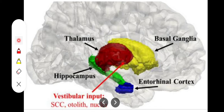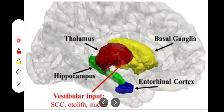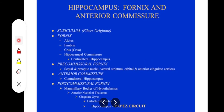The entorhinal cortex is another afferent connection related to olfactory sensations. The stria medullaris represents the afferent connection between the habenular nuclei and the anterior septal nuclei. The mammillothalamic tract connects the mammillary bodies to the anterior thalamic nuclei. These are all afferents of the limbic system.